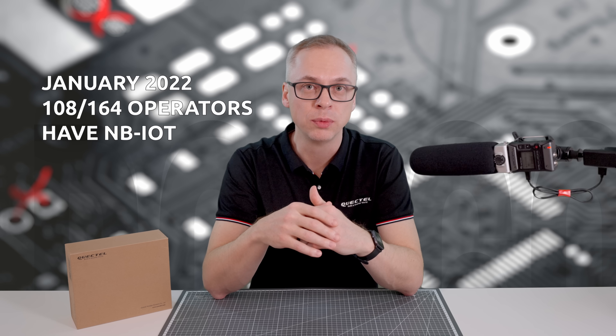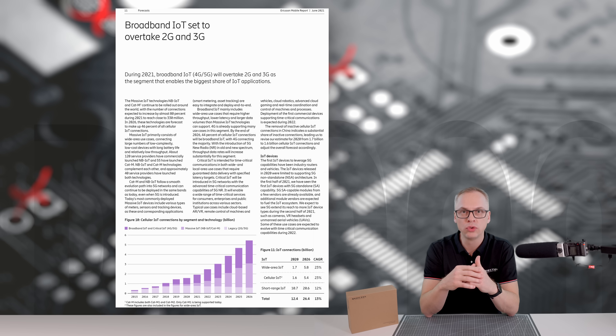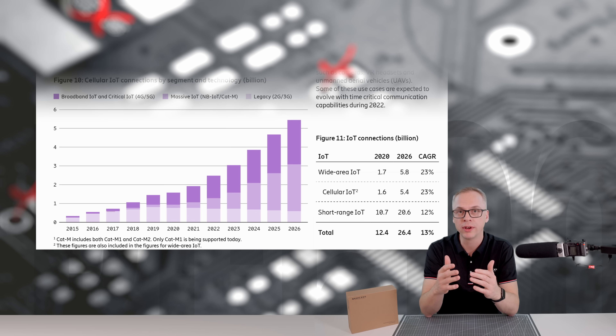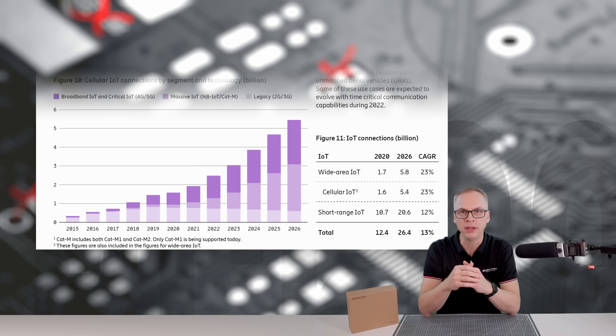The low cost — all these features make CAT-NB2 the best-in-class leading LPWA technology. That's why more and more operators all around the world support it. As of January 2022, there were already 108 operators with rolled out NB-IoT networks, with 164 existing mobile networks totally according to GSMA. Take a look at the cellular IoT connection number forecast. Here we have June 2021 Ericsson mobile report data. In the next 5 years, the number of connections is going to increase from around 2.5 billion to approximately 5.4 billion. The segment of NB-IoT and CAT-M, the massive IoT technologies, is expected to be almost half of this number — and that's a huge number indeed.